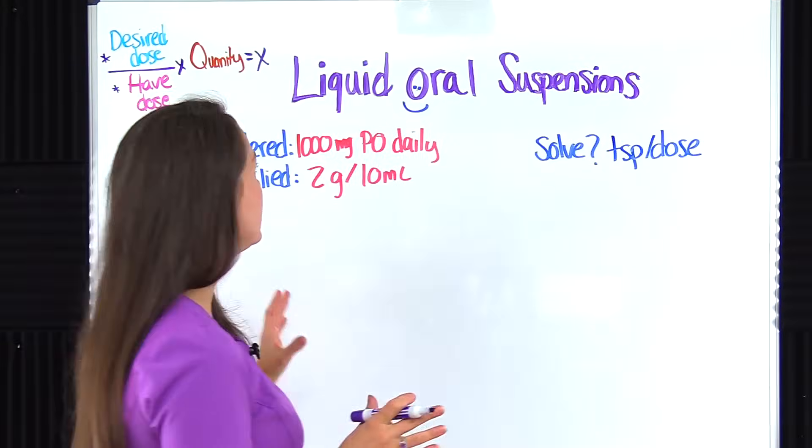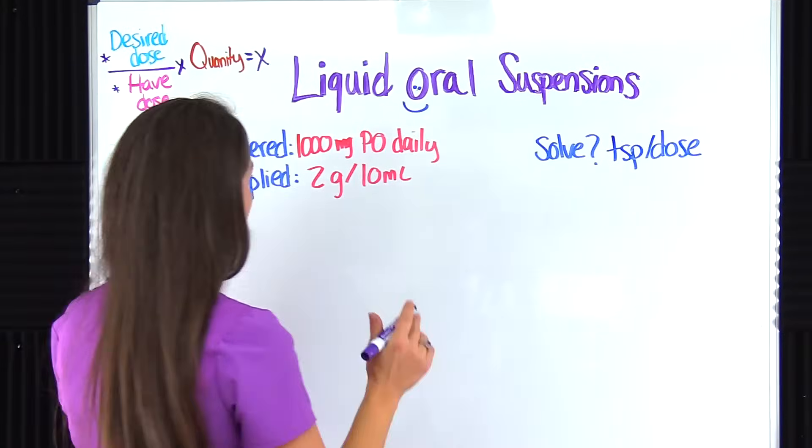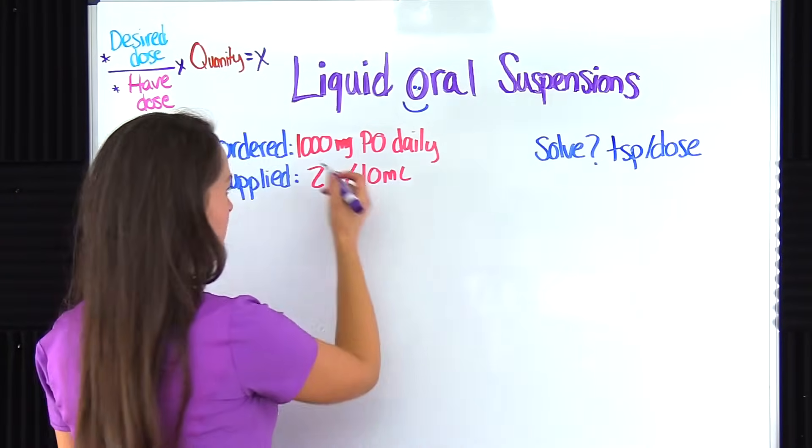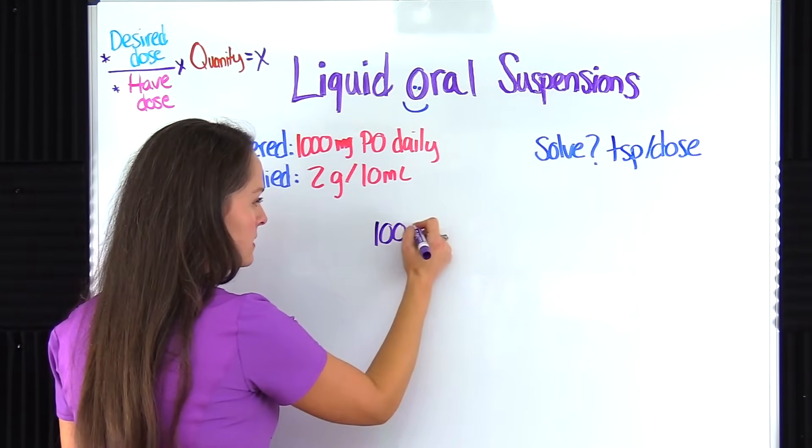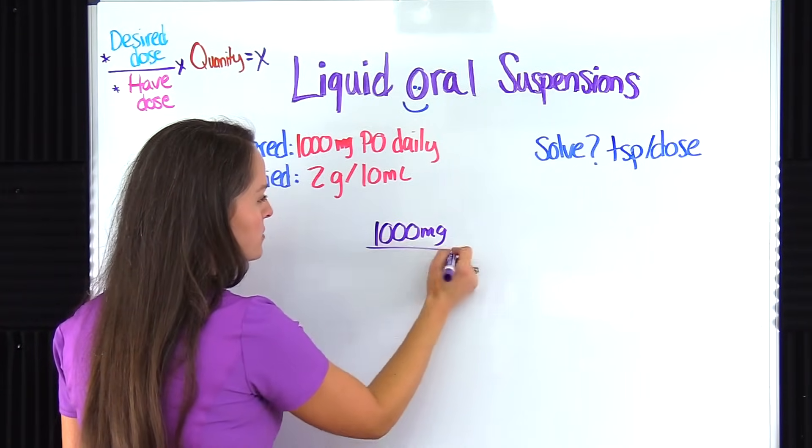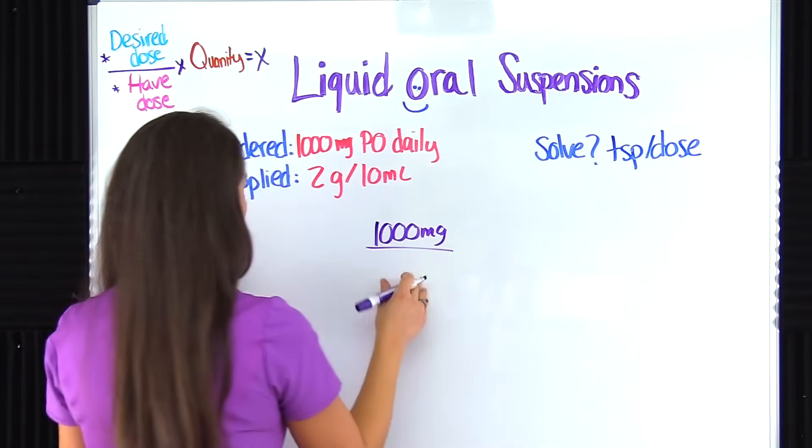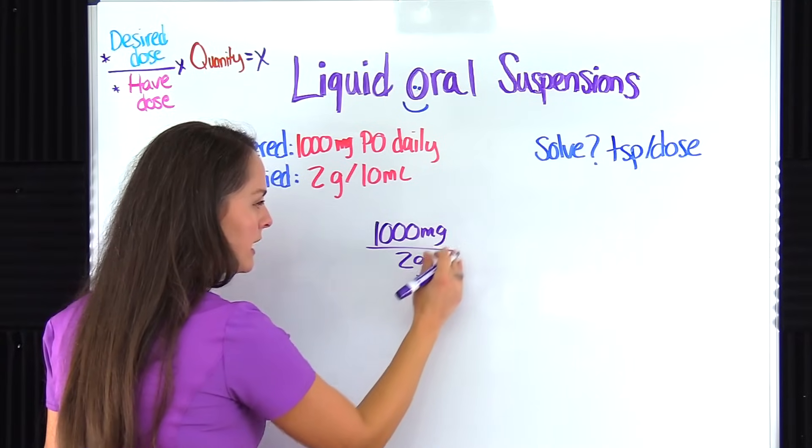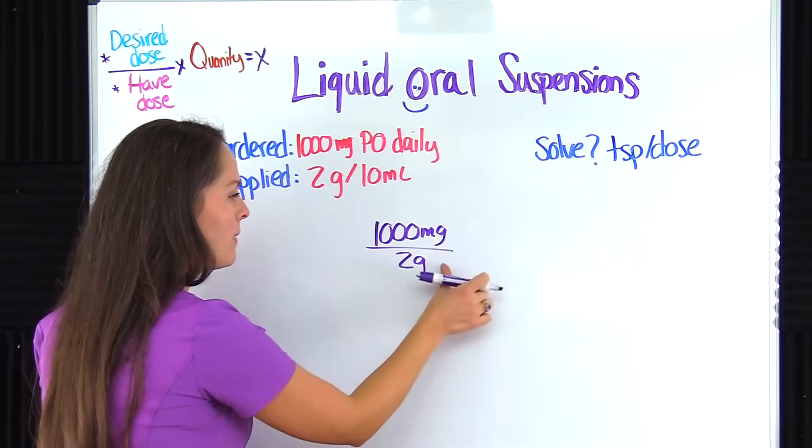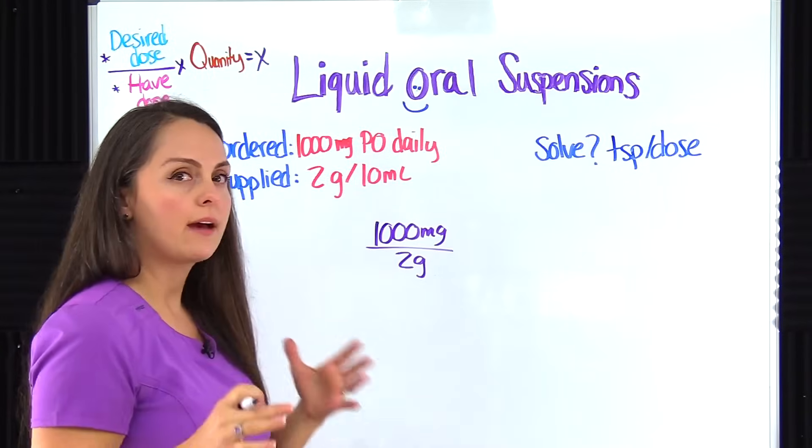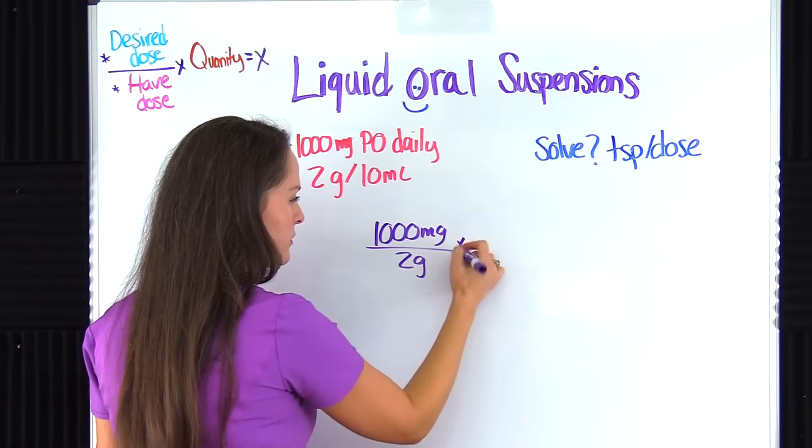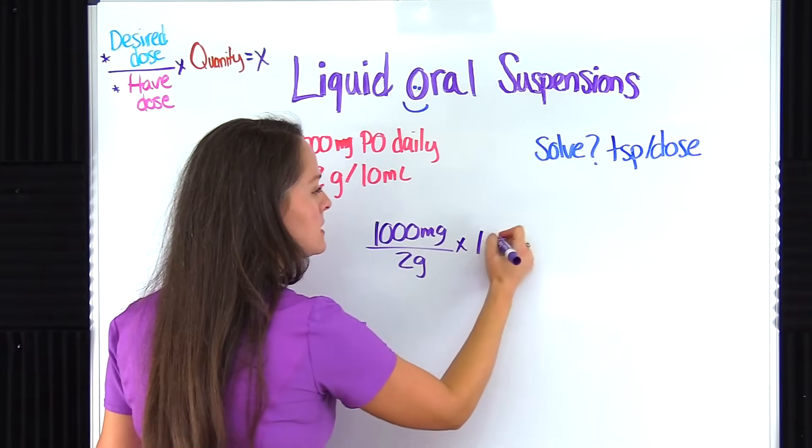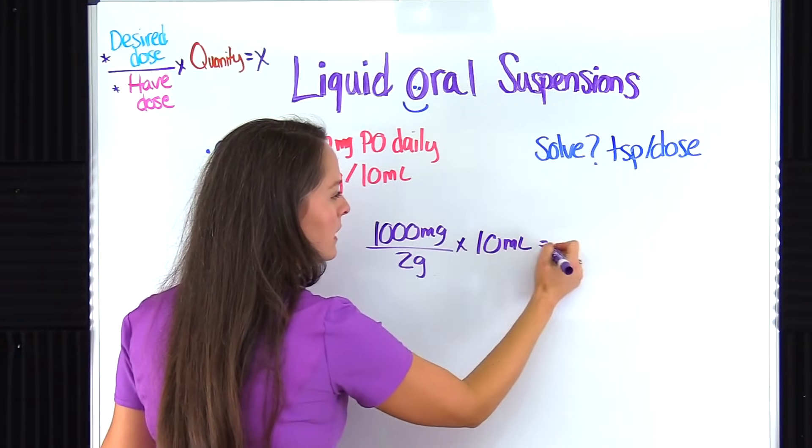So let's go ahead and plug into our formula. So first thing that goes on top is the desired dose, what they desire for this patient to have. They desire for the patient to have 1,000 milligrams. That's going to be over what I have on hand. So that's what I've been supplied with. I've been supplied with a dose that's 2 grams. Looking at these units of measurement, they do not match. So that's telling me I'm going to have to do some converting. So let's go ahead and just finish filling out this problem. That's going to be multiplied by the quantity, which here is our volume. So it's 10 mls equals x.